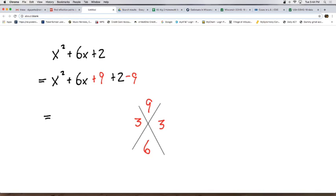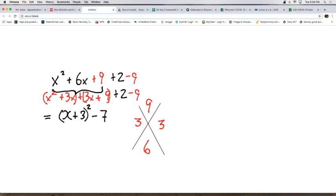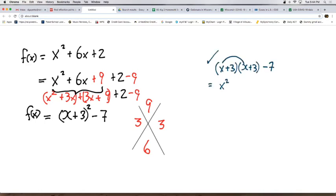Now the purpose for doing that is so that I can take x squared plus 6x plus 9, I made that to be a perfect square. If I were to factor it, factor by grouping, we would eventually get to the point where we had x plus 3 squared, and then of course we've got to bring down the 2 minus 9, which is negative 7. So I've just turned a function in standard form into a function in vertex form.